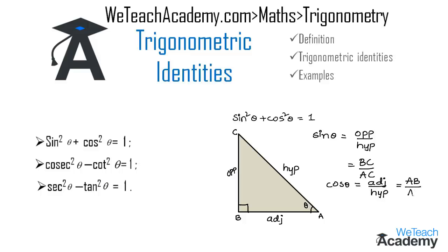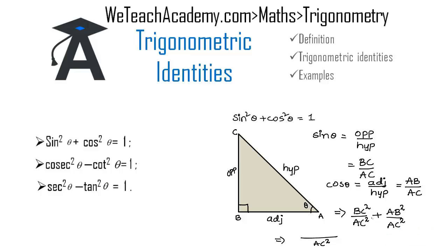Substituting the values of sin θ and cos θ into the identity sin²θ + cos²θ, we get BC² / AC² + AB² / AC². With a common denominator AC², the numerator becomes AB² + BC². By the Pythagorean theorem, AB² + BC² = AC², so AC² / AC² = 1. Therefore sin²θ + cos²θ = 1 is a trigonometric identity.